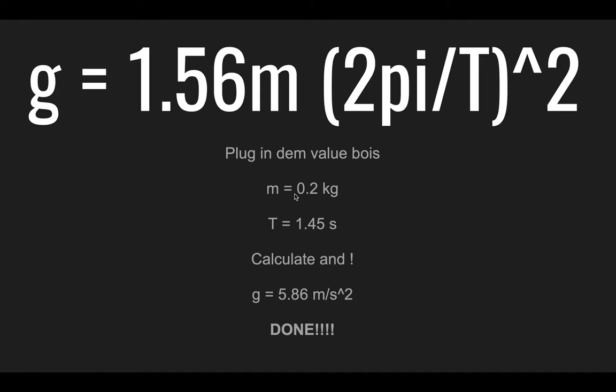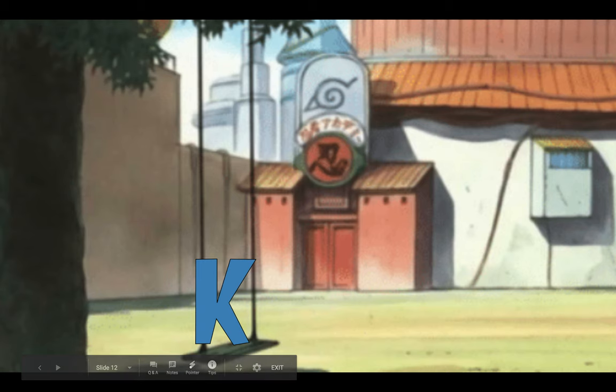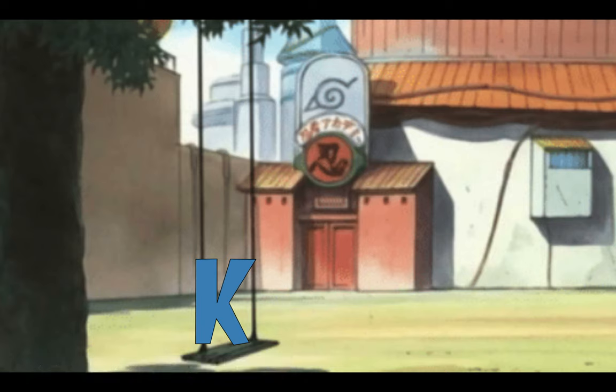And then you just plug in your values. You know that the mass is 0.2 kilograms, you plug that in right over there. The period is 1.45 seconds, you plug it into your calculator, and then your gravity force should be about 5.86 meters per second squared. And that's it, I guess we really didn't need k, did we? Thank you.